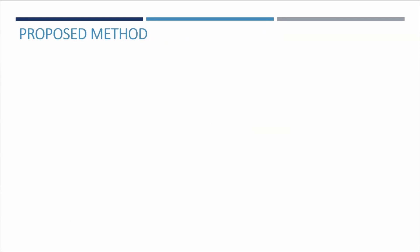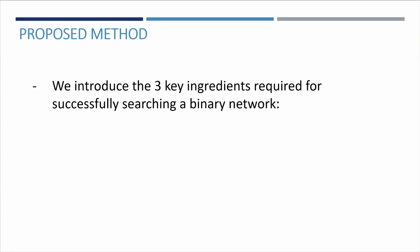Herein, we propose the Binary Architecture Search method, a framework that drastically reduces the accuracy gap between binary neural networks and their real-valued counterparts by means of neural architecture search. We show that directly applying NAS to the binary domain provides poor results. To address this, we describe for the first time the three key ingredients for successfully applying NAS to the binary domain.